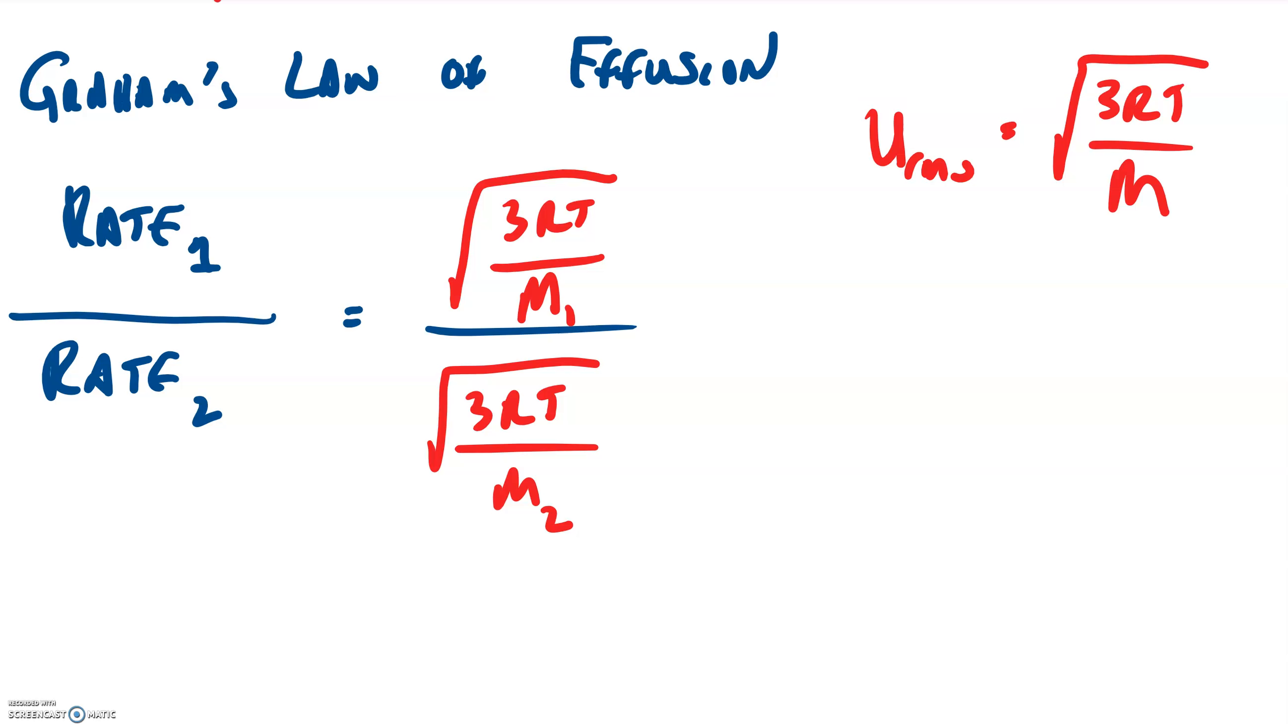Well, if that's the case, and 3RT are constant values, and the only thing that's different is the masses of gas 1 versus gas 2, then we're basically dividing by the inverse. And of course, that comes out looking like this: square root of mass of gas 2 over the square root of mass of gas 1. And that's the whole thing.